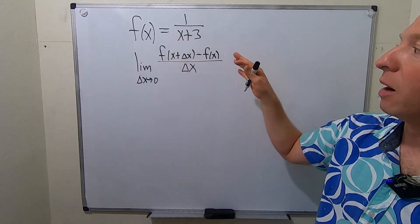We're left with negative delta x in the numerator: negative delta x over (x+delta x+3)(x+3), all divided by delta x. Dividing by delta x is the same as multiplying by its reciprocal, 1/delta x. The delta x terms cancel, leaving the limit as delta x approaches zero of negative one over (x+delta x+3)(x+3).